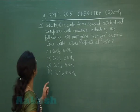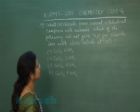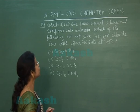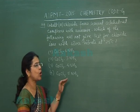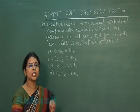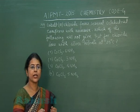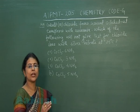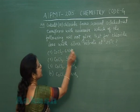Next question is question number 149. Cobalt(III) chloride forms several octahedral complexes with ammonia. Which of the following will not give a test for chloride ions with silver nitrate at 25°C? We need to identify which complex has no free chloride ion — the one without free chloride will not form a white AgCl precipitate on addition of AgNO₃.